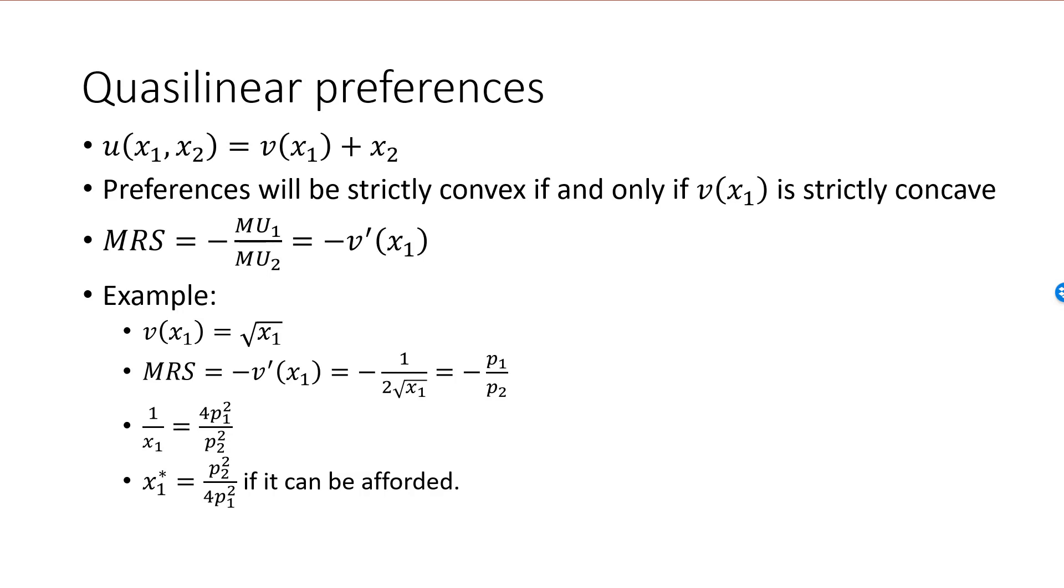If it is not, we have a boundary solution where the entire income is spent on good 1. If it is, the remaining income is spent on good 2. Note that optimal consumption of good 1 does not depend on income as soon as we have reached x1 star. An increase in income will only increase our consumption of good 2.